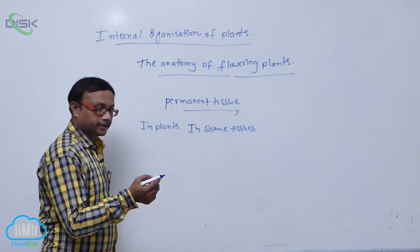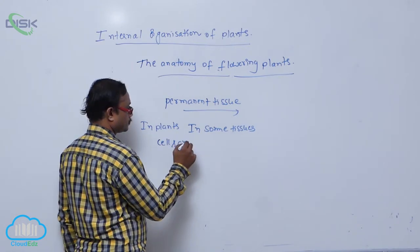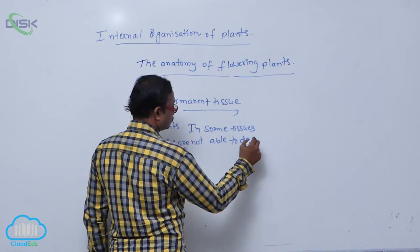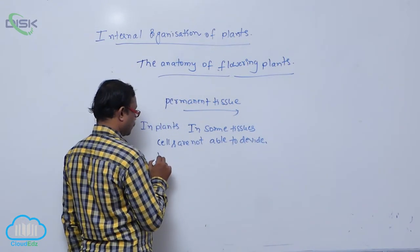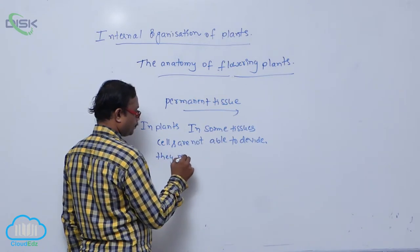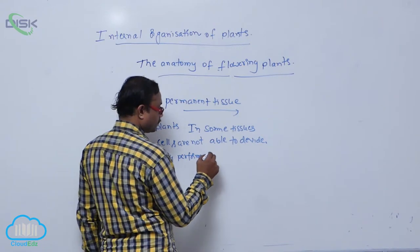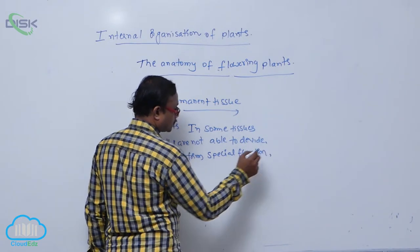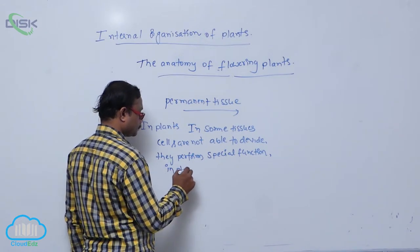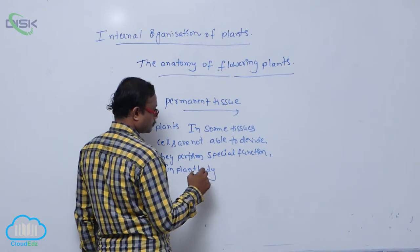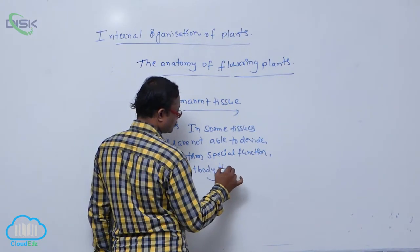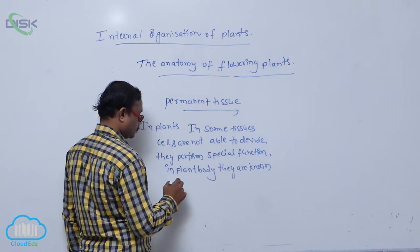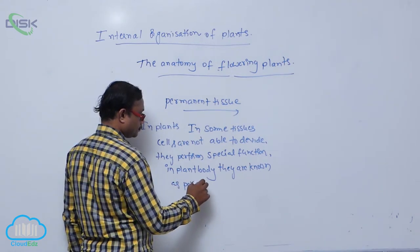In some tissues, cells are not able to divide. They perform special functions in the plant body. They are known as permanent tissue.